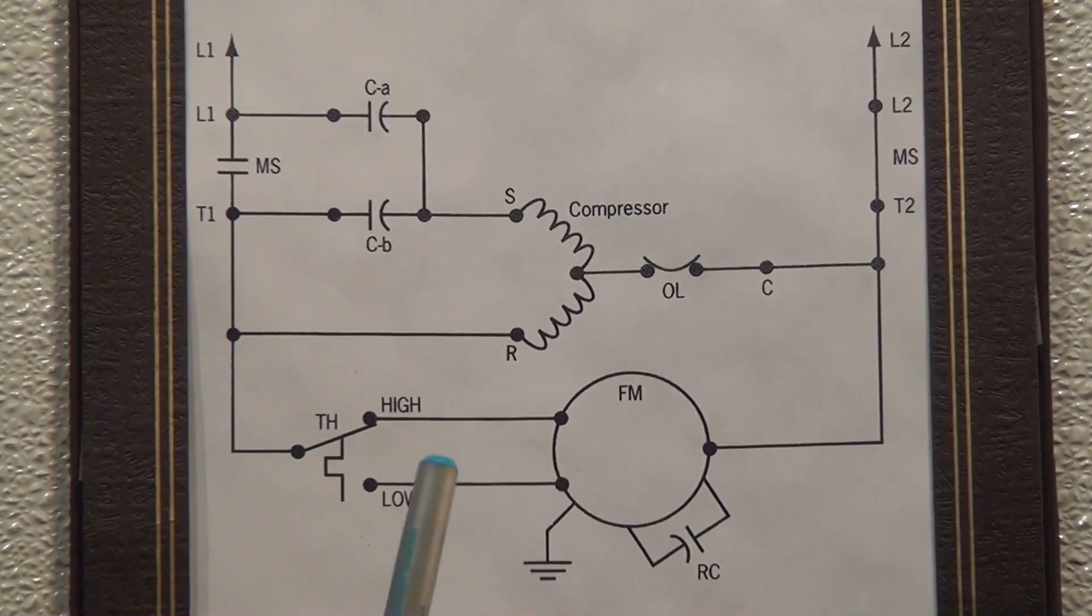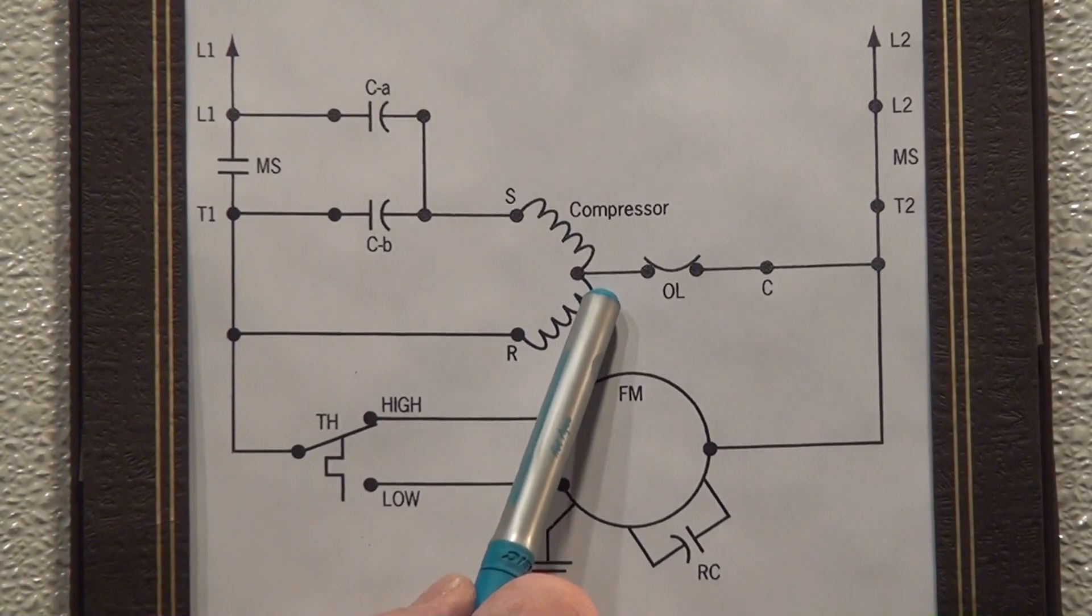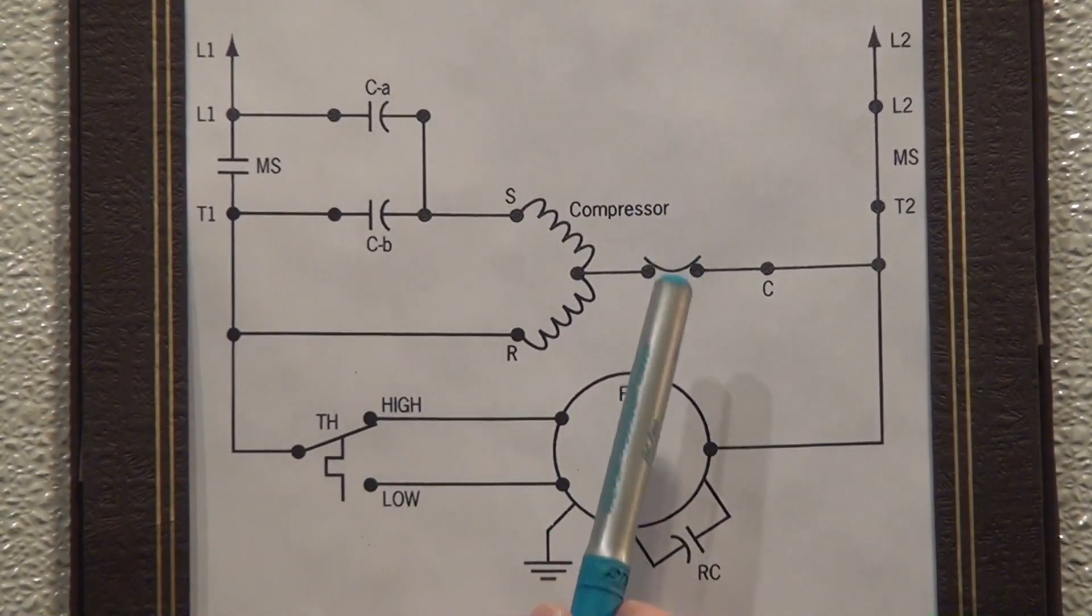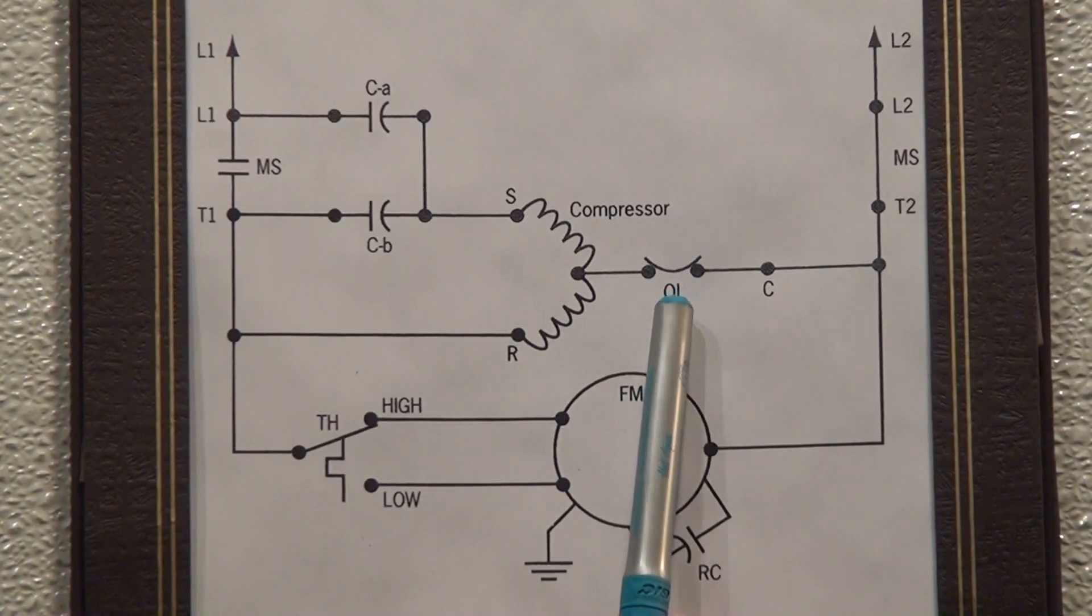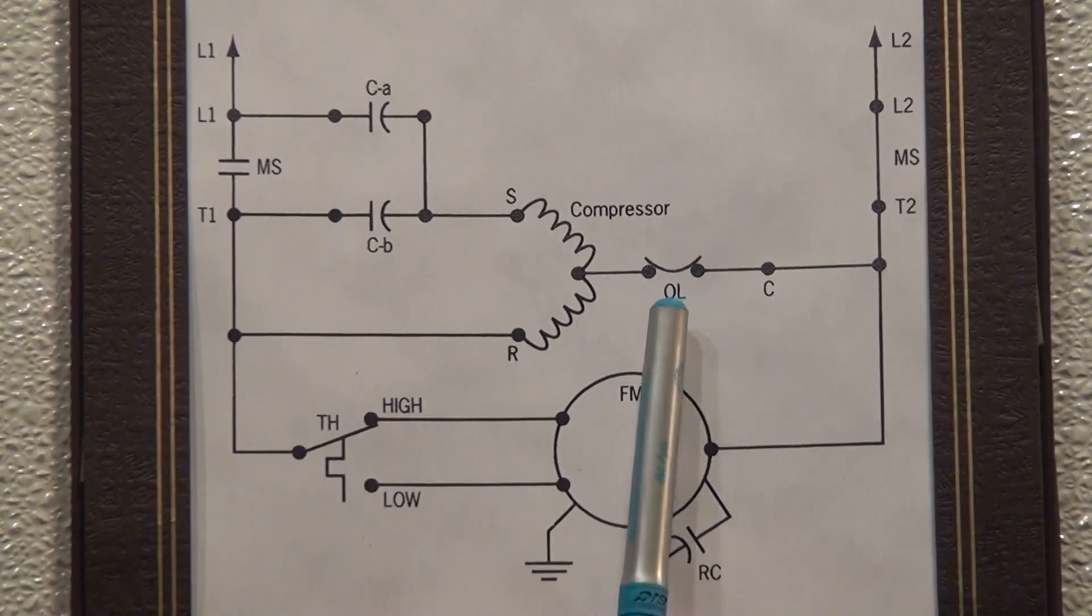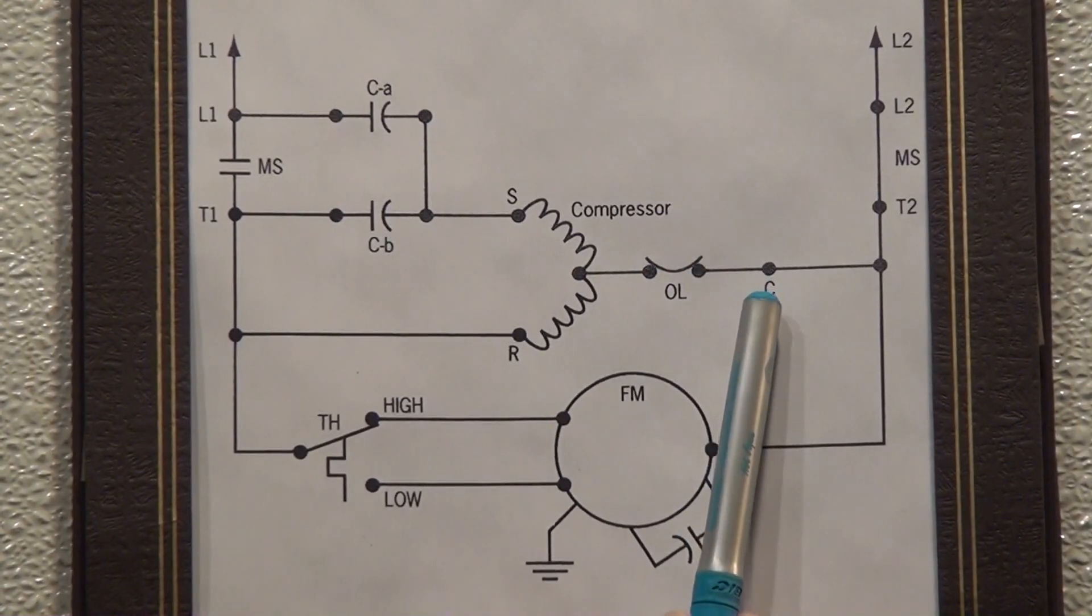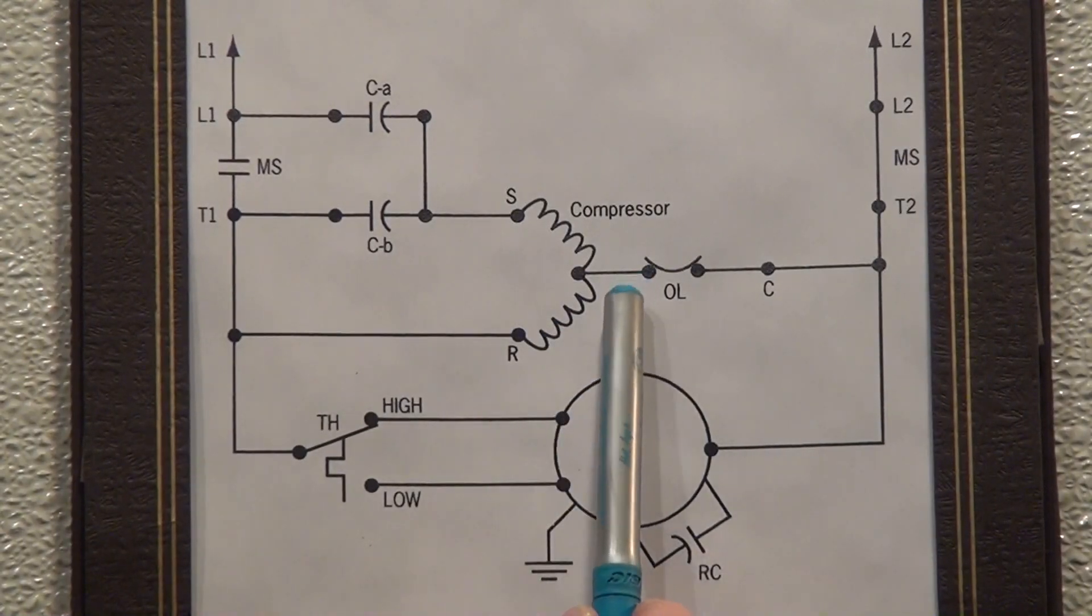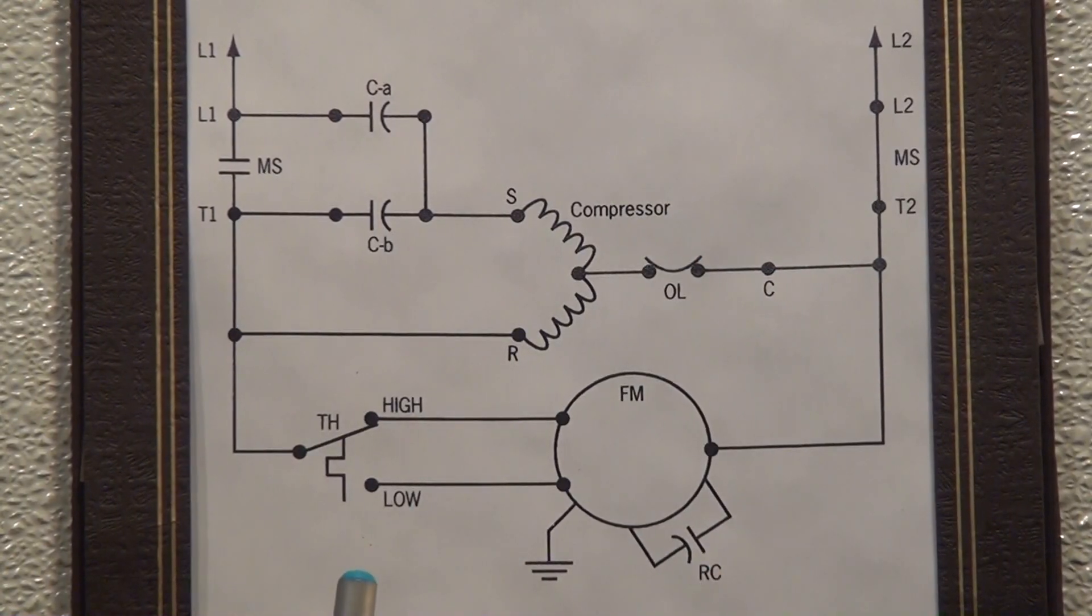Now the compressor itself, as long as we identify the compressor, we can understand the start winding here, the run winding here, and we also have another piece of information about the compressor that we can understand. This compressor has an internal overload protector, and the reason that we know that's true is because OL in this situation is the overload and you're going to notice that it's wired on this side of the common terminal for the compressor. So common, run, and start on the compressor showing the motor windings, and this is showing the internal overload because it's on this side of the common terminal.